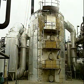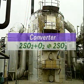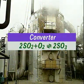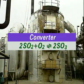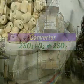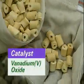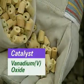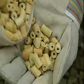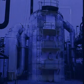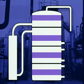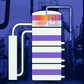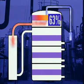In the converter, sulphur dioxide reacts with oxygen to produce sulphur trioxide. The reaction requires a catalyst, mainly vanadium pentoxide, which is most effective at 440 degrees Celsius. There are four beds of catalyst in the converter. The first catalyst bed converts about 63% of the sulphur dioxide to sulphur trioxide, and heat is produced.